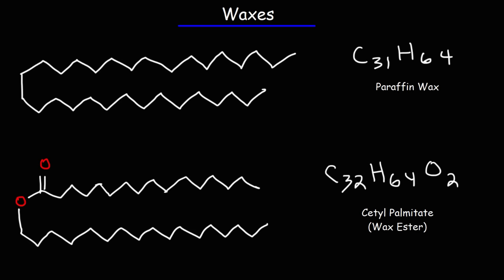Now the next type of lipid that we need to talk about are waxes. Waxes are nonpolar. They don't mix well with water. Waxes contain very long alkyl chains, as you can see in this picture above. But they can have many different functional groups. Here we have a paraffin wax with 31 carbon atoms. The functional group is an alkane. An alkane is an organic molecule that only contains carbon and hydrogen. It doesn't have any double bonds. Below we have a wax ester. We still have two long alkyl chains, but we do have an ester functional group. This one has 32 carbon atoms.